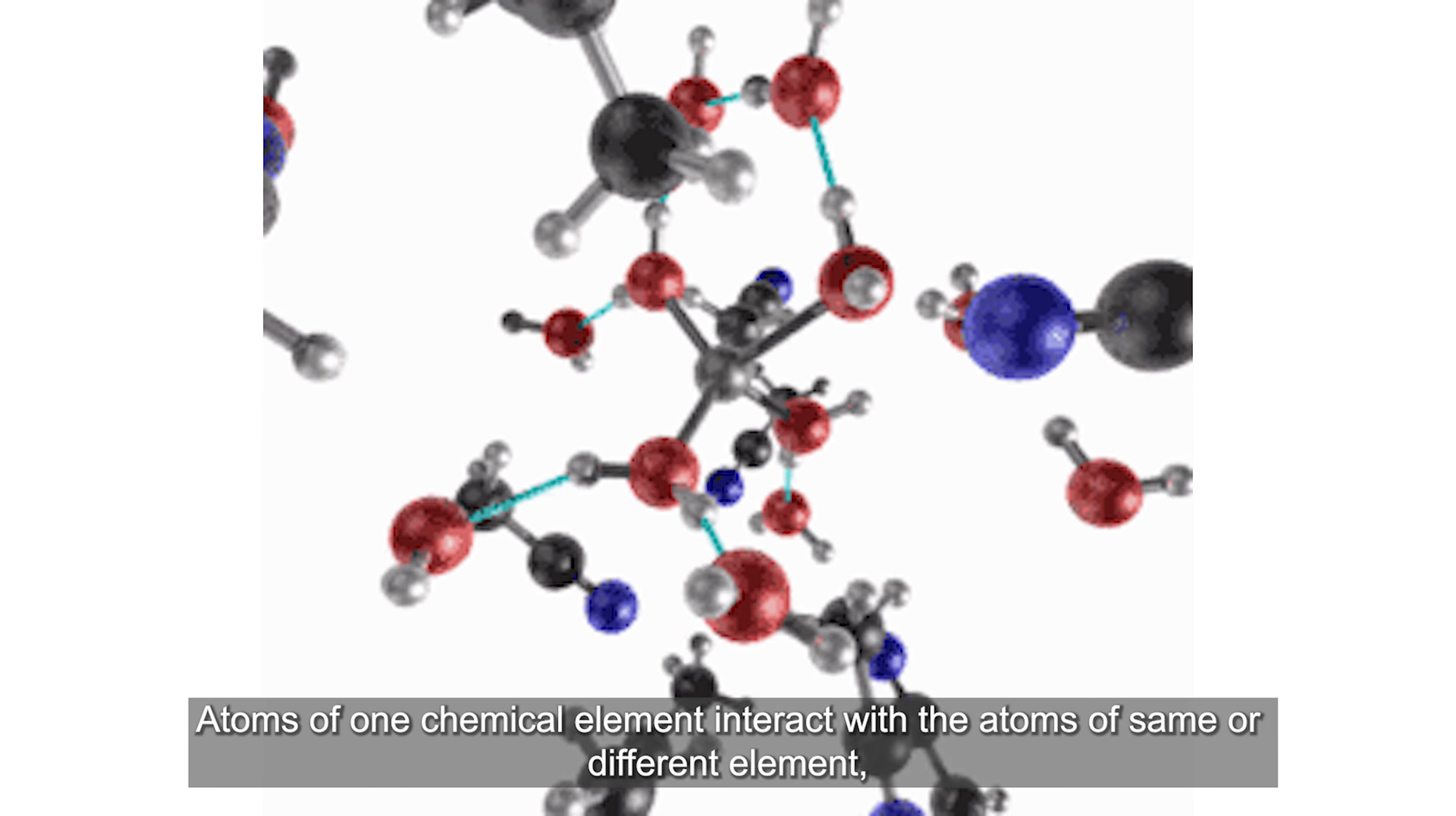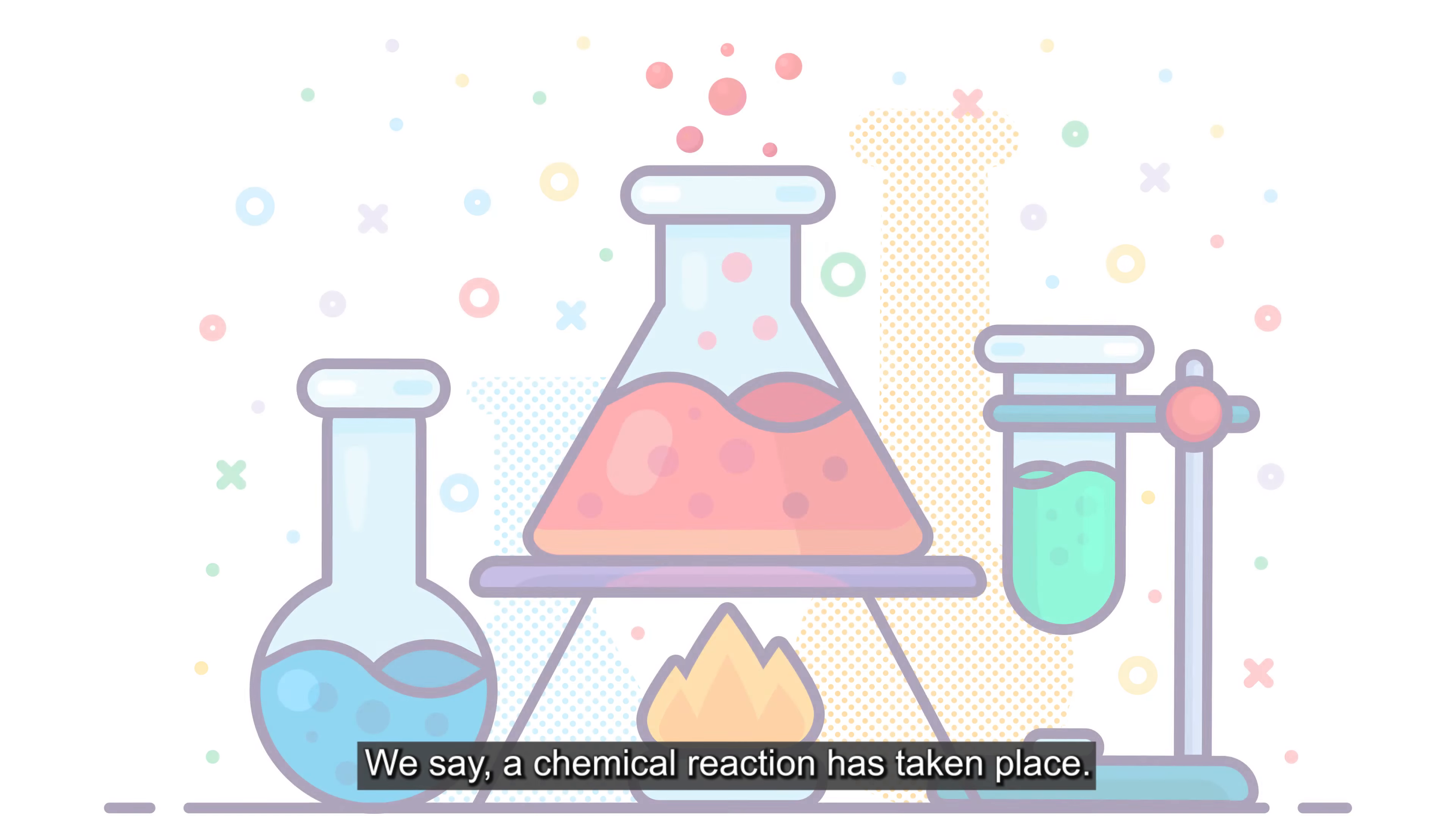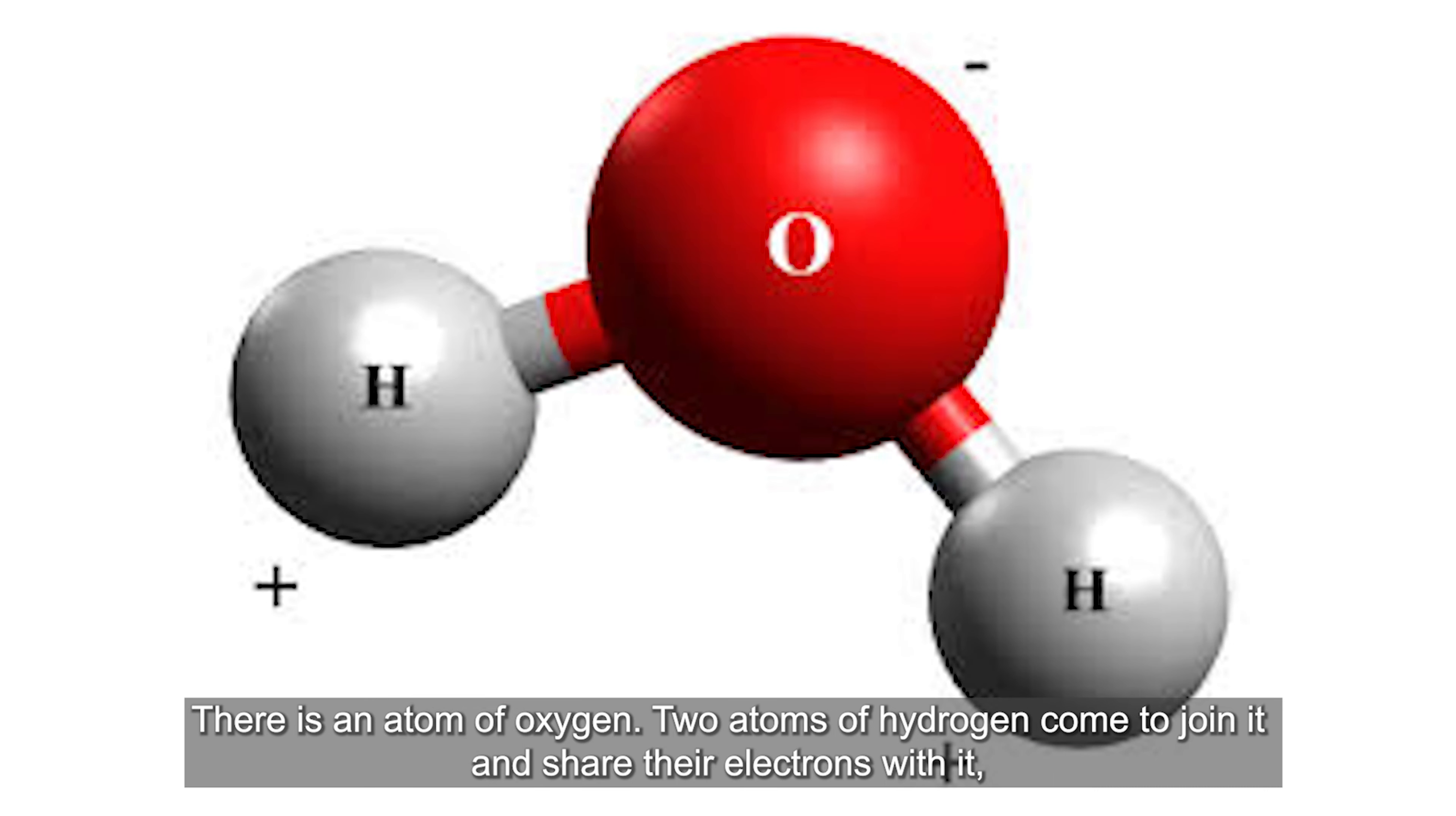Basic chemistry happens when matter, that is atoms, interact. Atoms of one chemical element interact with the atoms of same or different element with the involvement of energy of course, and they are transformed into a new different substance and we say a chemical reaction has taken place. This is simple chemistry.